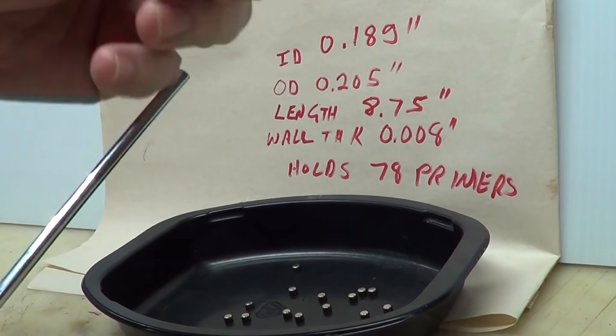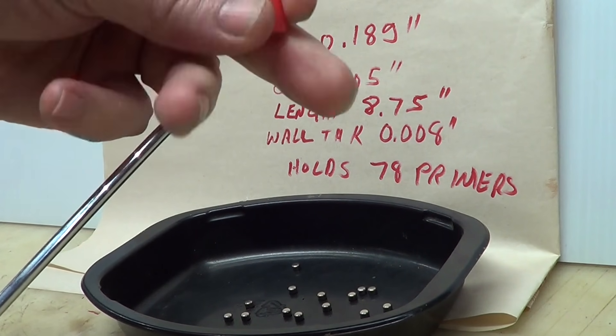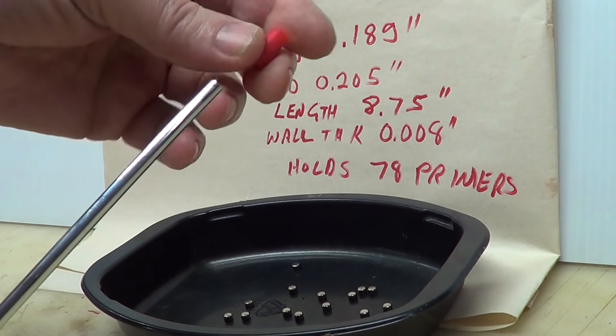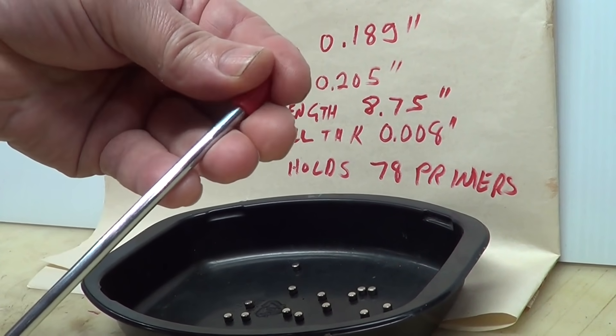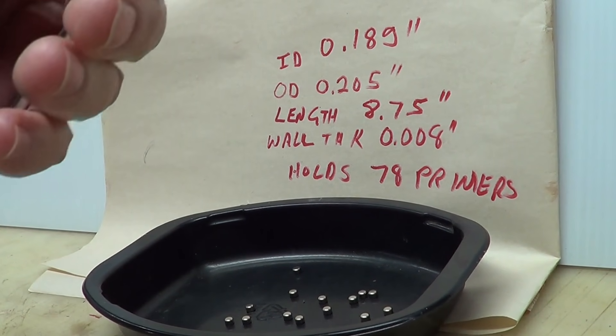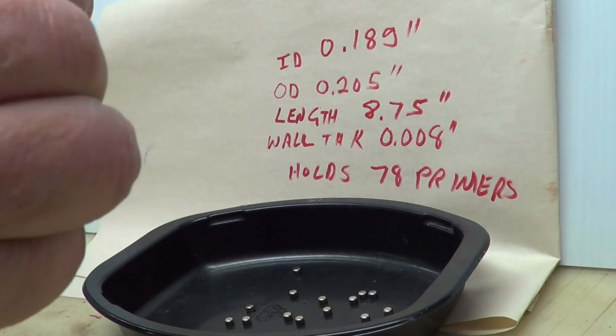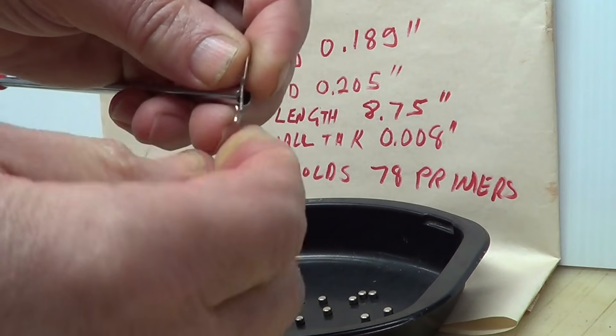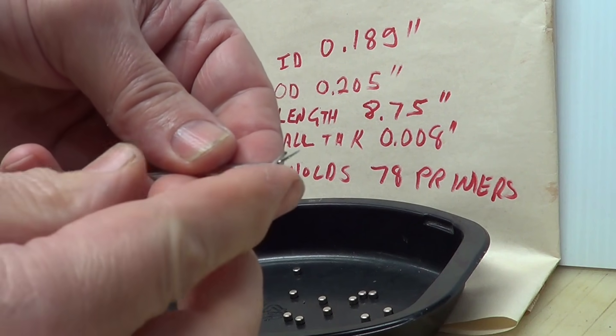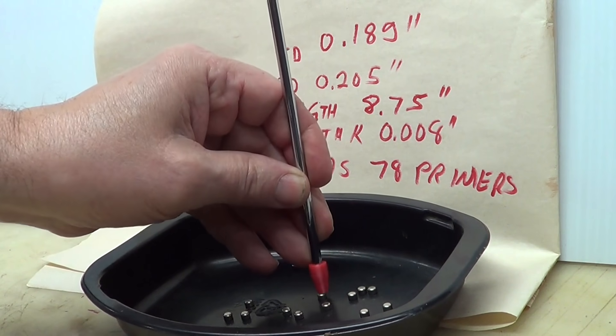I printed the tip off from Thingiverse. I'll put their place on Thingiverse down below where you can download this if you wanted to 3D print it. It just goes onto the end here. And at the other end of the tube, there's a little cross slot drilled here. And you put a piece of paper clip through there so the primers don't fall out.